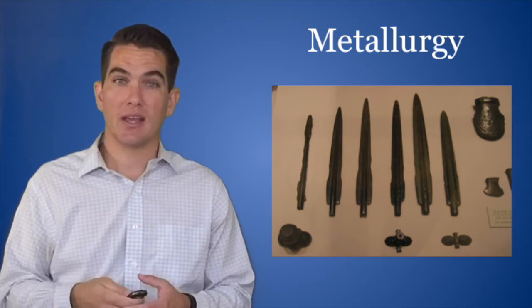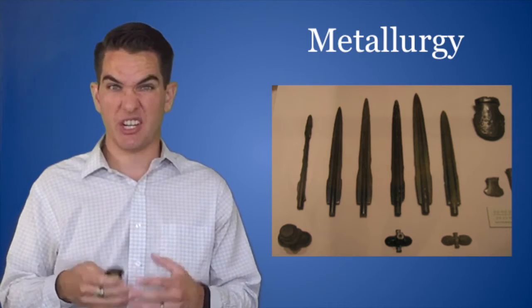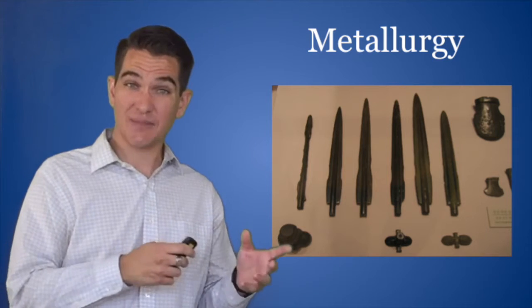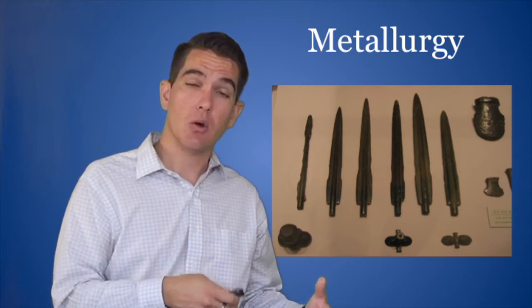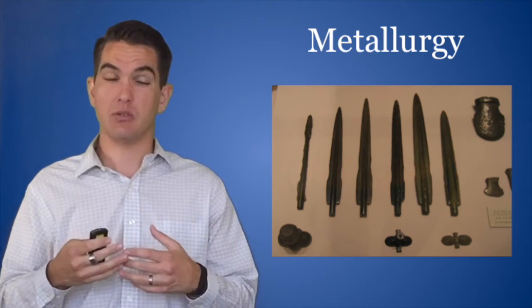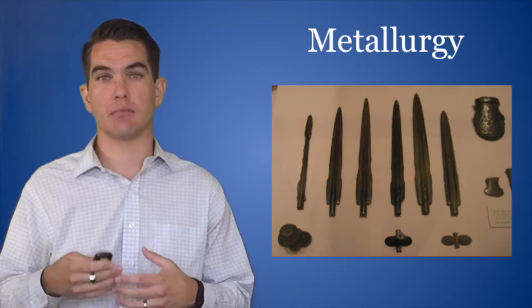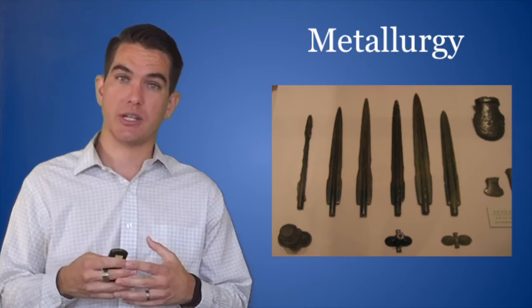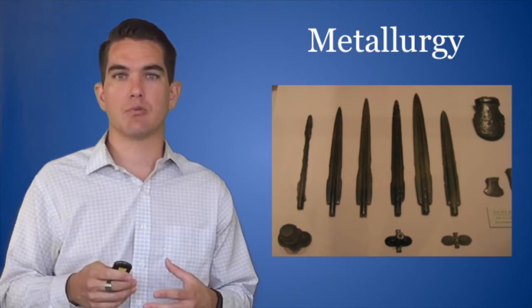All sorts of new technologies are developing in this period. One example is the development of metallurgy. Metallurgy is the science of using metals for tools and weapons. Last video, we talked about the Stone Age. What human beings are going to develop next after agriculture is the Bronze Age and eventually the Iron Age, where they're going to use metallurgy to develop tools and weapons and really start to dominate their environment.